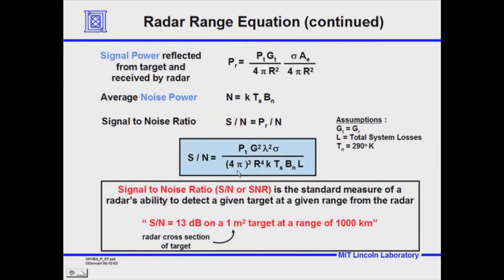If you plug in a certain cross-section and a certain range into the radar equation, all the other parameters are the innate properties of the radar itself — so it's a statement of a radar's ability to detect, for example, a one square meter target at a thousand kilometers.